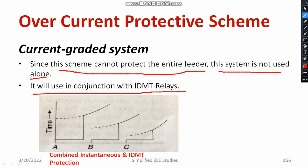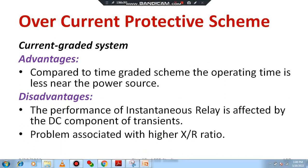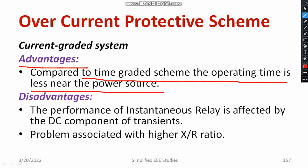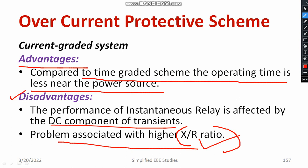You must have studied about IDMT characteristics — both time and current are inversely proportional. Regarding the features of the current graded system: alone it is not possible to operate. What are the major advantages? Compared to the time graded scheme, the operating time is less near the power source — the particular time is kept constant at any time. Regarding the drawbacks: the performance of the instantaneous relay is affected by the DC component of the transient, which affects accuracy. There is also the problem associated with a high X/R ratio. These are the major setbacks of this particular scheme, as X and R depend on the value of current, and the DC component present in the transient also affects performance.